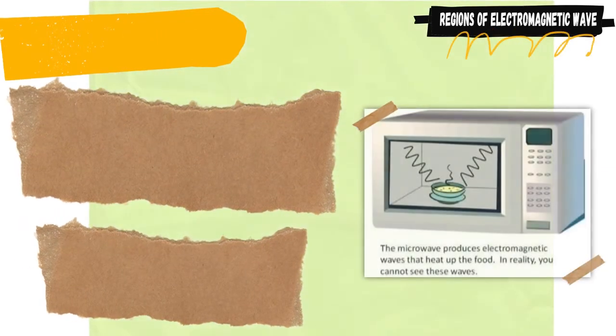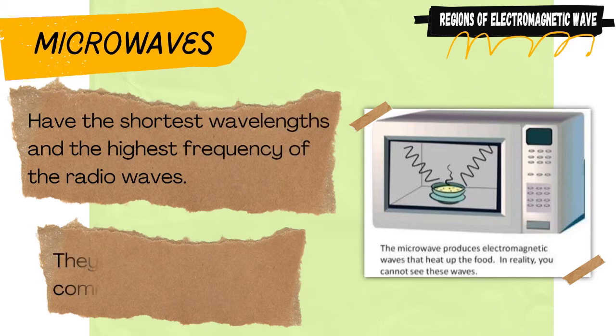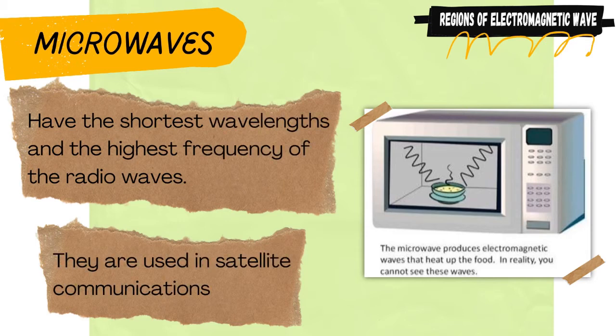Microwaves are radio waves of very short wavelengths. They are used in satellite communication because they can penetrate the ionosphere — a layer of Earth's atmosphere in which there is a high concentration of charged particles.